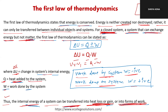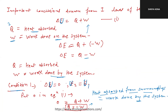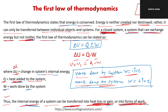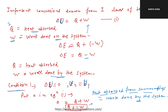Here Q is added to the system. Now, let's look at what is written. Important conclusions drawn from the first law. Let's say delta U equals Q plus W. If Q is positive and W is positive, that means work is being done on the system. So delta U equals Q plus W.